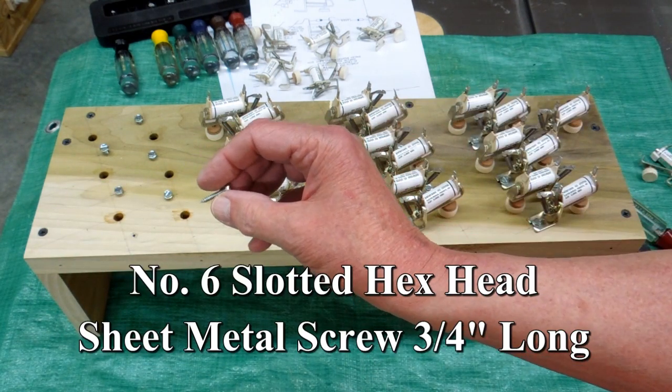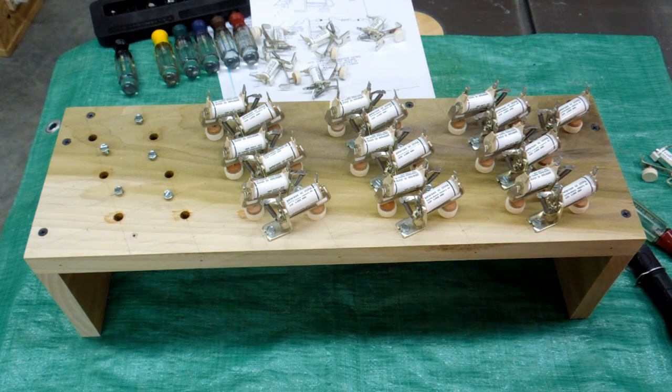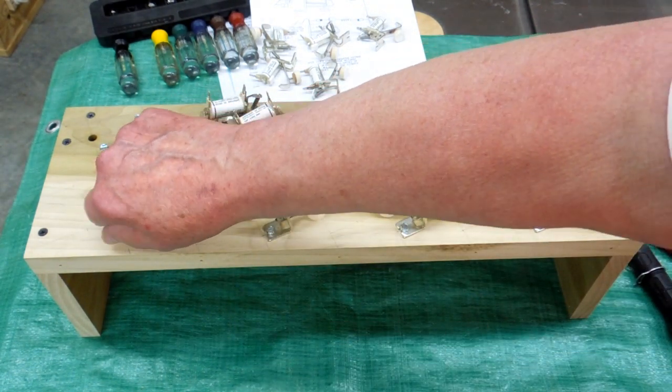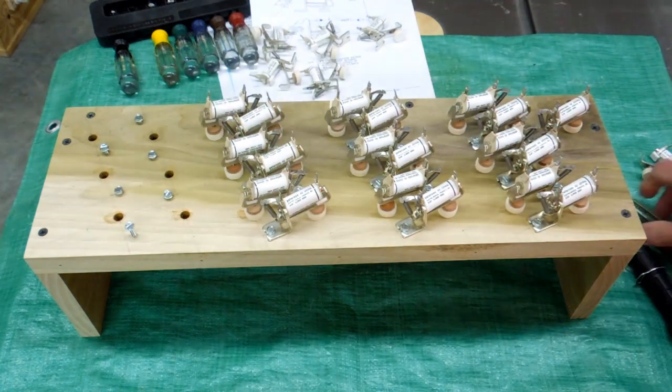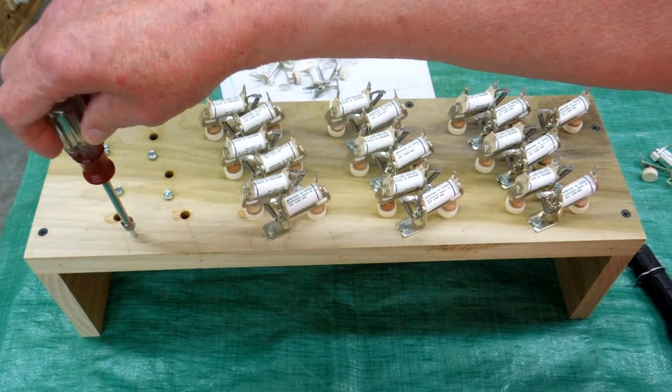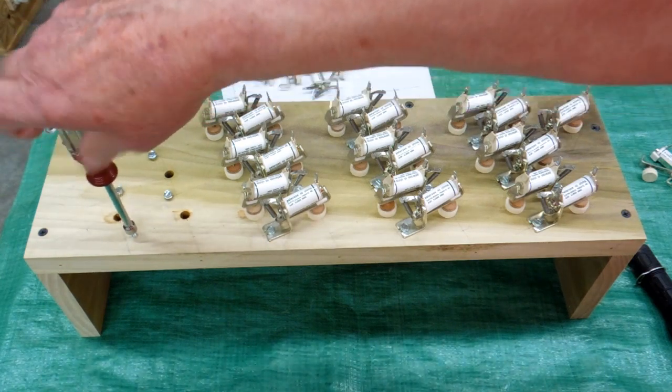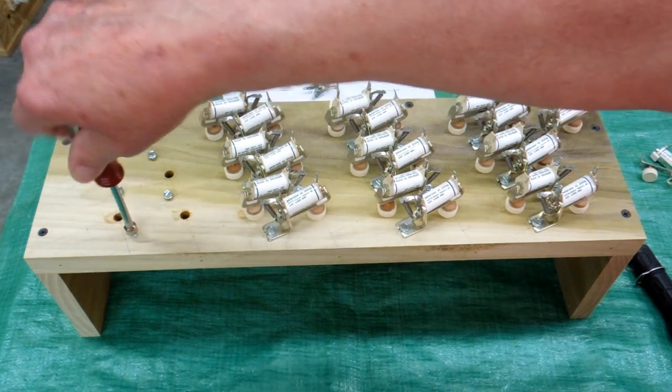The screws going in are a number 6 sheet metal screw, drilled a number 47 pilot hole, and ran this in with a cordless, and ran it up and down a couple of times, nice and gentle. This is no time to be snapping things off.